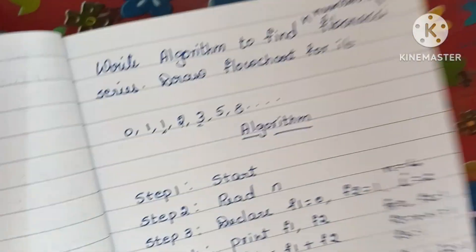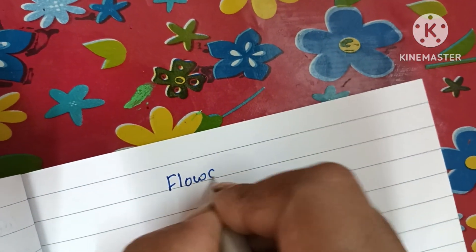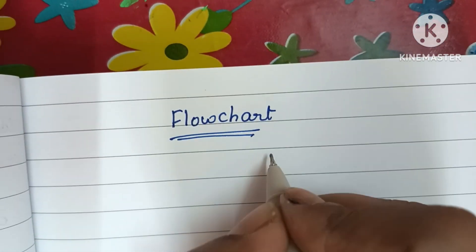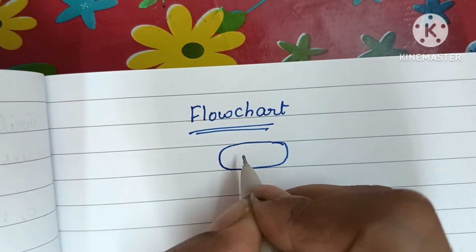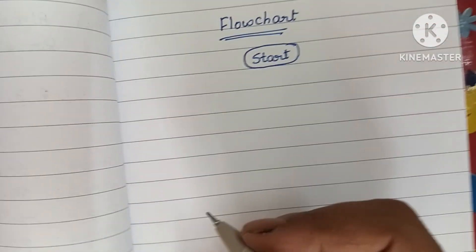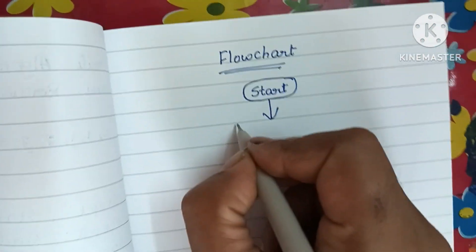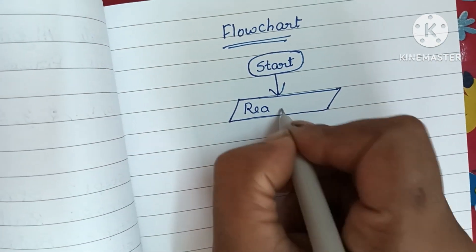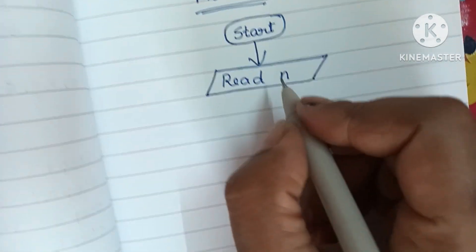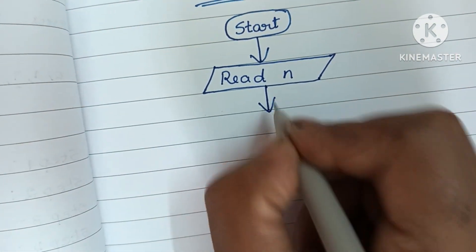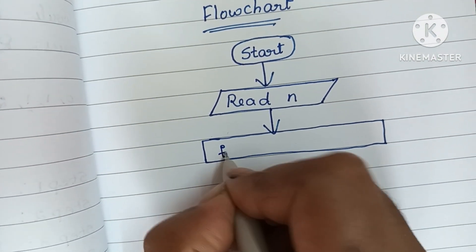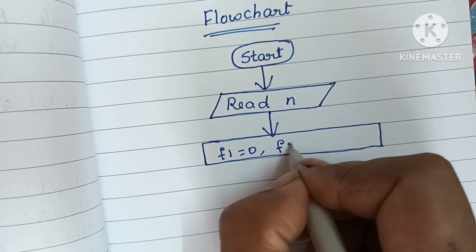Next we are going to draw the flowchart. A flowchart is a graphical representation of a solved problem. The flowchart always starts with a start statement written within an oval shape. Next we read the input value N. Then we declare F1 equal to zero, F2 equal to one, and I equal to two.